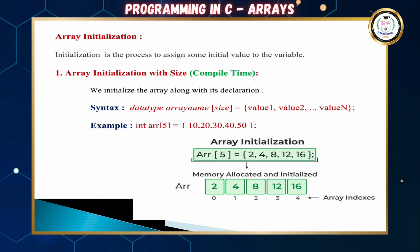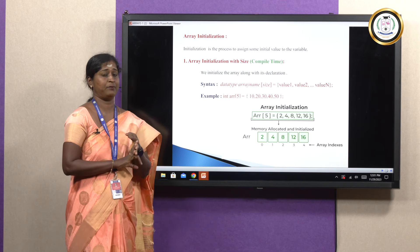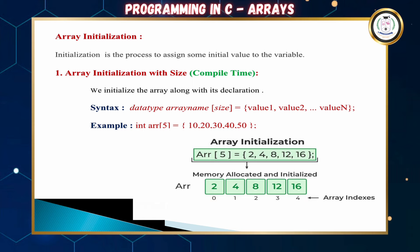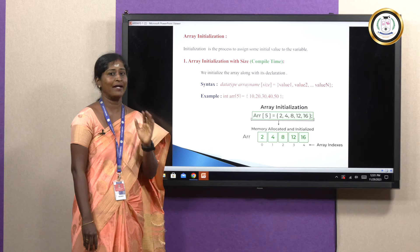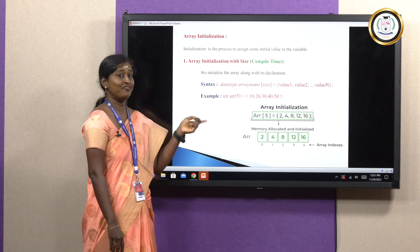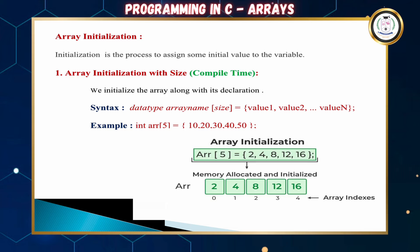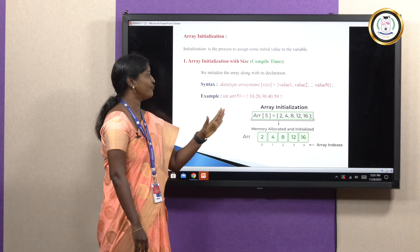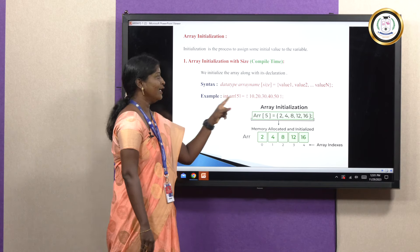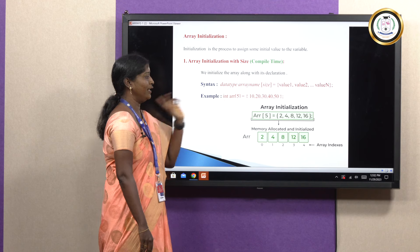Next is array initialization, which can be done in 3 different types. The first is array initialization with size, done at compile time. The syntax is: data_type array_name[size] = {values}. For example, int ARR[5] stores 5 integer values. Here 10, 20, 30, 40, 50 are assigned to ARR; or values 2, 4, 8, 12, 16 assigned to ARR[5].